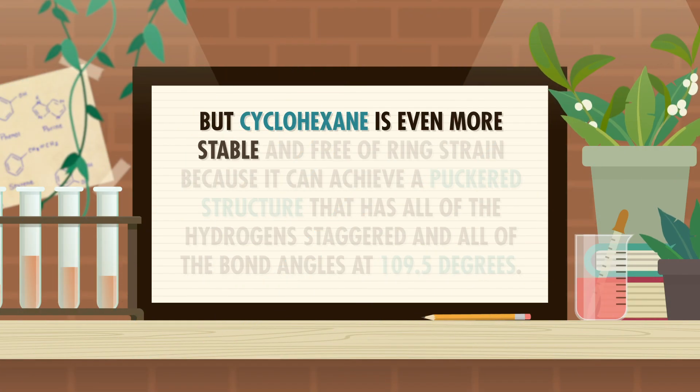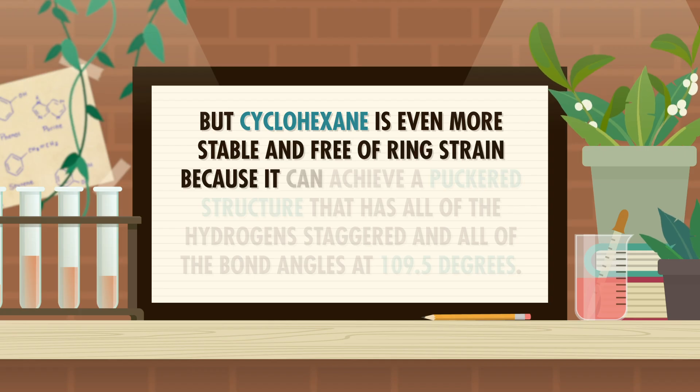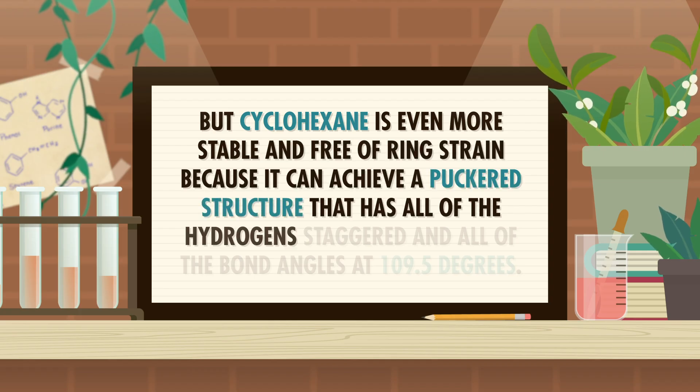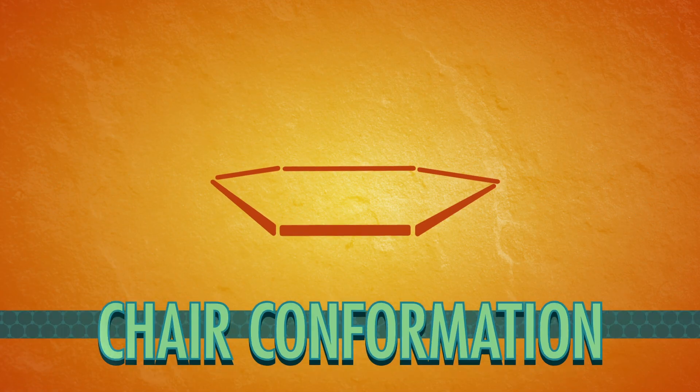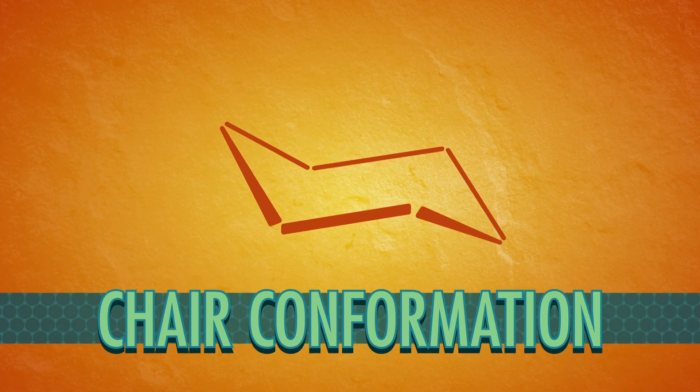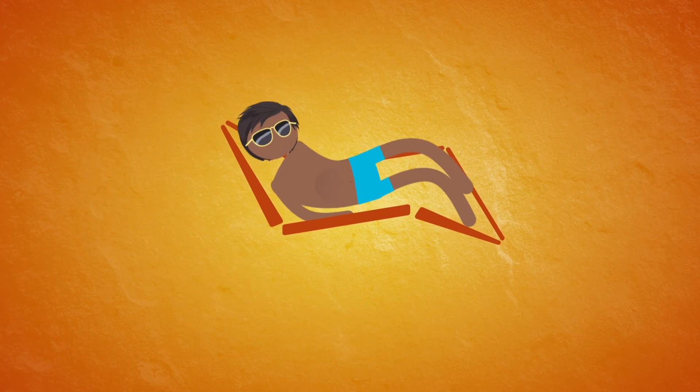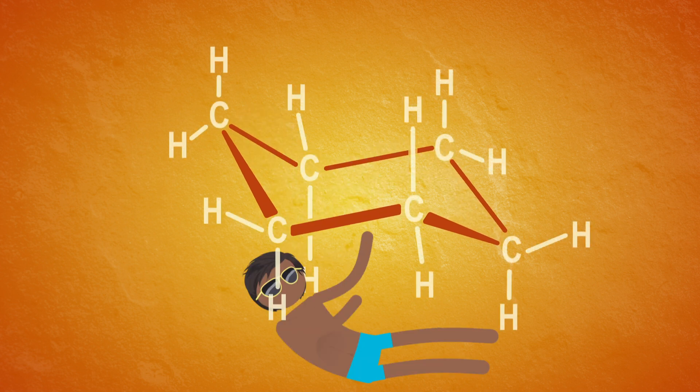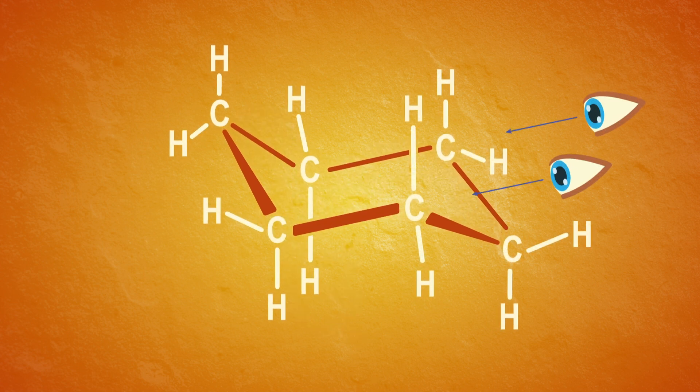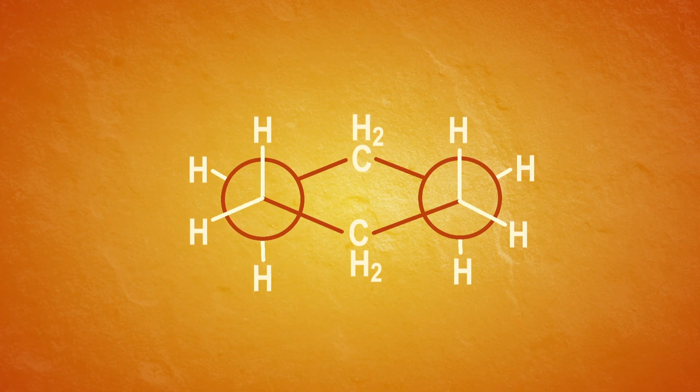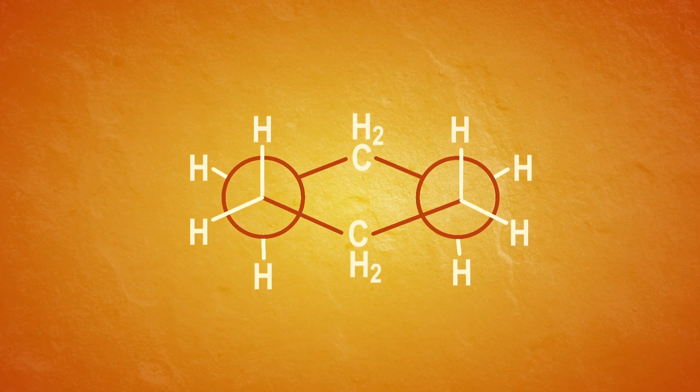But cyclohexane is even more stable and free of ring strain because it can achieve a puckered structure that has all of the hydrogens staggered and all of the bond angles at 109.5 degrees. This basically magical structure is called the chair conformation of cyclohexane. Except instead of a plush armchair that you'd want to take a nap in, it's more like a crooked beach chair on the deck of a cruise ship. The two parallel lines in the middle are sort of like the seat of the chair. And if we look along those carbon-carbon bonds, we can draw a Newman projection and see that the hydrogens are staggered.